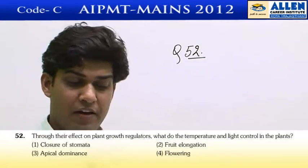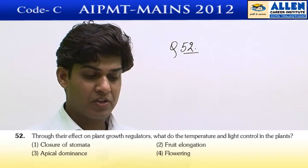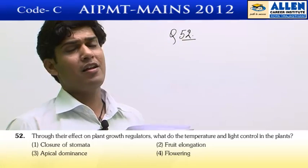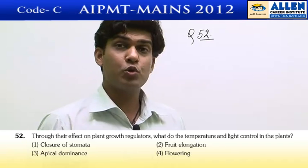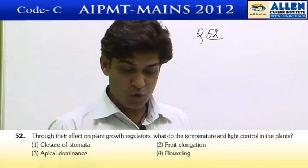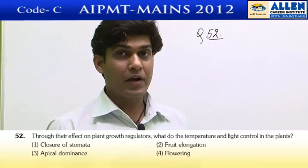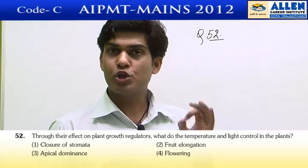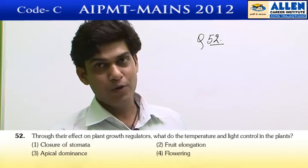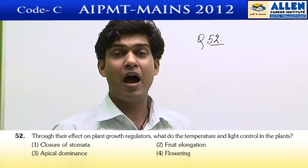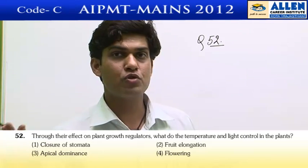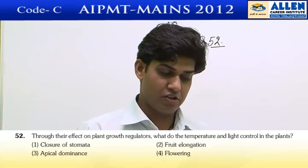Question number 52: though their effect on plant growth regulators, what do temperature and light control in plants? We need to identify the environmental factor that shows its impact via plant growth regulators. The first option is closure of stomata — stomatal closure is simply a potassium-hydrogen ion antiport activity, meaning there is no influence of a growth regulator. So option A is not correct.